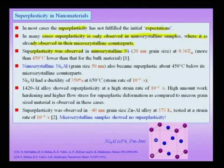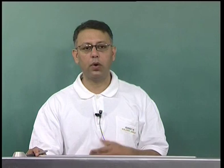In most cases of super plasticity, it is observed only where it already exists in micron-scale grain size samples. However, we will take up a few examples of interesting cases where super plasticity was observed at lower temperatures, at higher strain rates, or in nano-crystalline materials where it was not observed in the micro-crystalline counterparts.